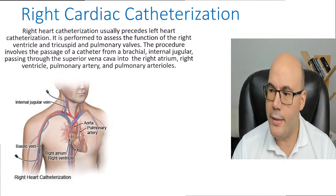How is a right cardiac catheterization done through the brachial vein approach? If the brachial vein is used, the catheter progresses into the right axillary vein, then the right subclavian vein, then the right brachiocephalic vein, and finally the superior vena cava, which enters the right atrium.